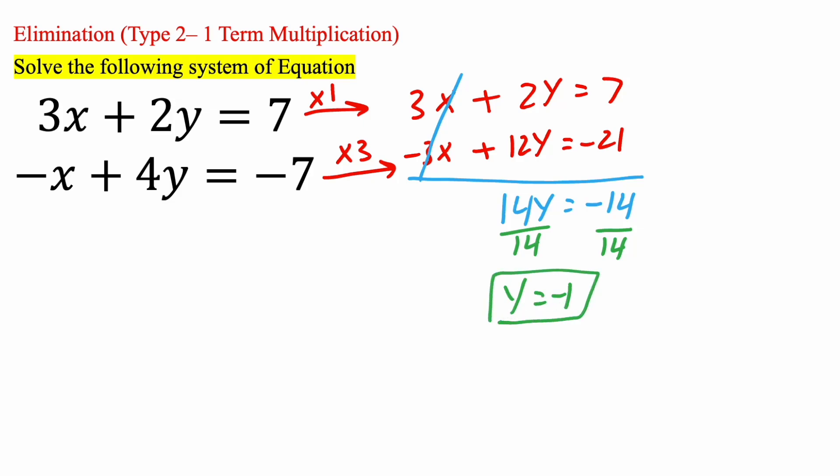So we have one answer, but we also need to get x. So we can choose either the first equation or the second equation. I'm going to choose the first equation. So we have 3x plus, I know y, y is negative 1. So I'm going to replace y with negative 1 is equal to 7.